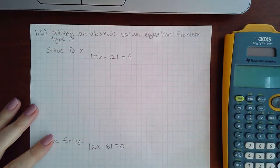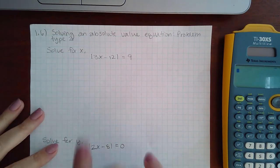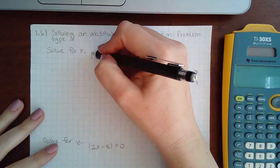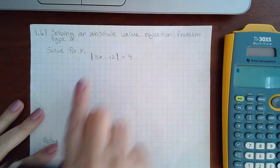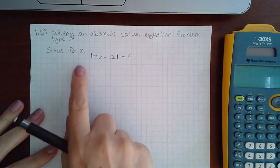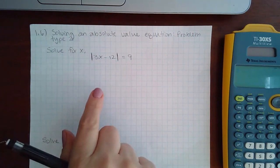Okay, here we have 1.6: solving an absolute value equation, problem type 2. Now here I already have what's in the bars by itself. There's nothing being added, subtracted on the outside, and nothing being multiplied or divided outside the bars.